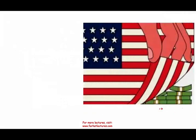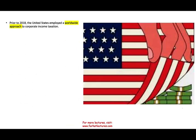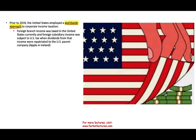Now let's look at the US, broken into pre-2018 and post-2018. Before 2018, the United States had a very strict worldwide approach to corporate income taxes. Foreign branch income was taxed in the United States, and foreign subsidiary income was subject to US tax when the dividend from that income was repatriated to the US parent company. If you were a branch, you were taxed as if operating in the US; if you were a subsidiary, you were taxed only when you sent that money home as a dividend.